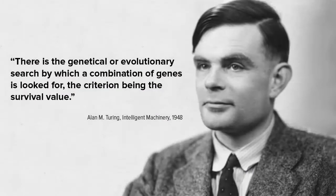Evolutionary computing goes back as early as 1948, where Alan Turing proposed the term genetical or evolutionary search. By the 60s, there were three different implementations on this very basic idea, developed in different places. In the United States, there were Vogel, Owens and Walsh, and they introduced evolutionary programming, while Holland called this method genetic algorithm.